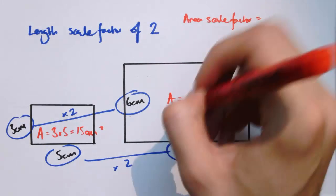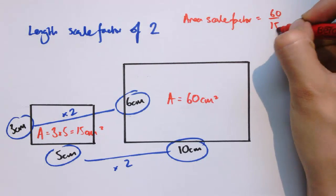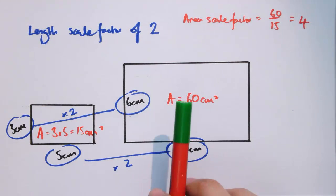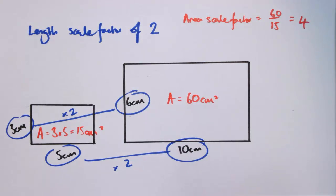So that area scale factor, new value over old value, is 60 divided by 15, which is 4. We can play around with different lengths of rectangle. At the moment you might look at this and think well, 4 is double 2, but 4 is also 2 squared. It's actually 2 squared that turns out to be the significant one.